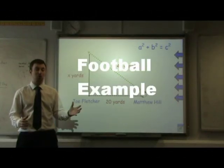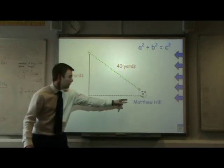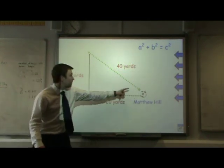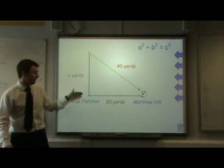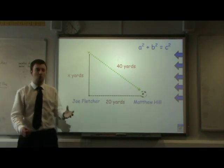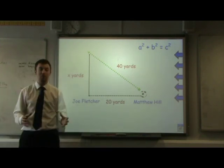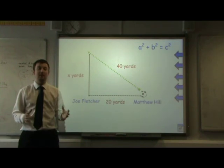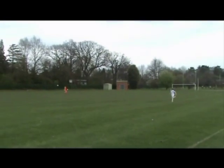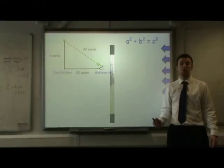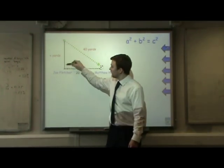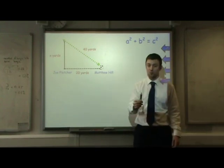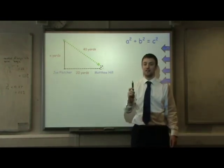At Alderbrook we've got two future England regulars, Matthew Hill and Joe Fletcher. Matt wants to play a 40 yard diagonal cross field ball to Joe, who is standing exactly 20 yards level to the left of him. Joe wants to know how far he needs to run to perfectly intercept that ball. Again, we can use Pythagoras to find out. The only difference this time is we're not trying to find the longest side — we're actually finding one of the shorter sides. It doesn't matter which one you're trying to find; the process is still the same.